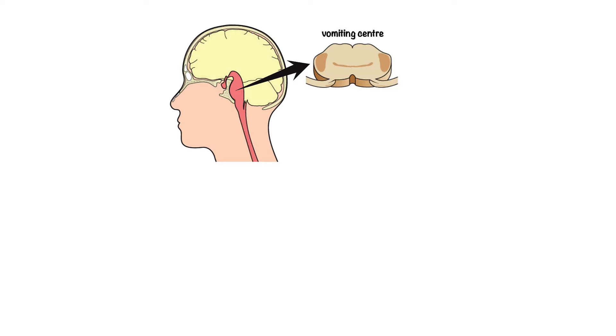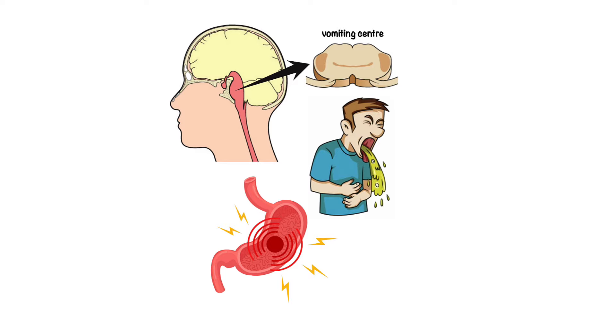When stimulated, the vomiting center initiates and controls the act of vomiting, which involves a series of contractions of the smooth muscles lining the digestive tract. The vomiting center receives stimulatory signals from four major neural pathways.